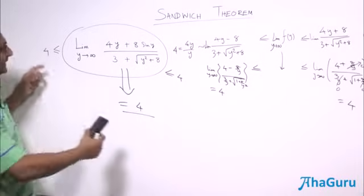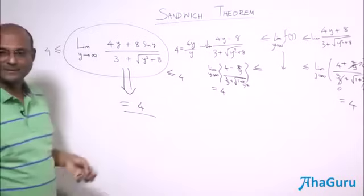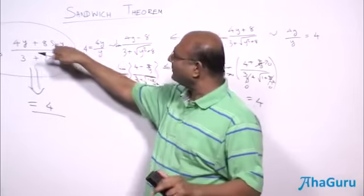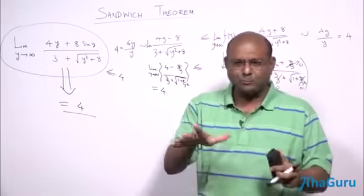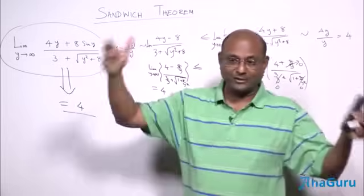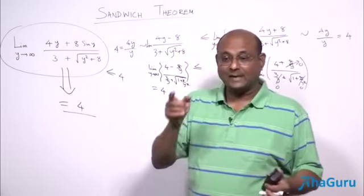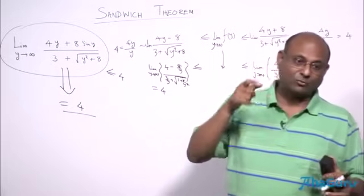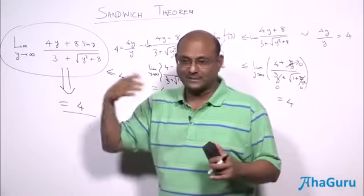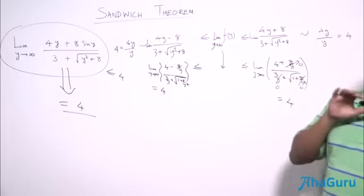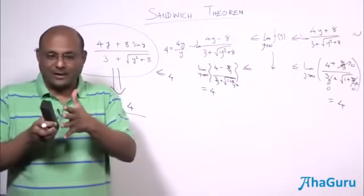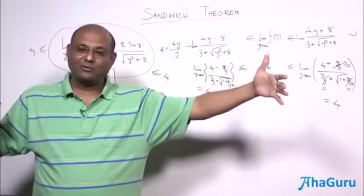What we have done here is use the Sandwich Theorem — we sandwiched the expression between two other things and compressed it in. This example works fine, but it's not the real power of the Sandwich Theorem, because one could argue that sin y is small compared to y anyway. The real power of the Sandwich Theorem comes when you have many terms — like n terms — that you want to add up, and then find the limit as n goes to infinity.